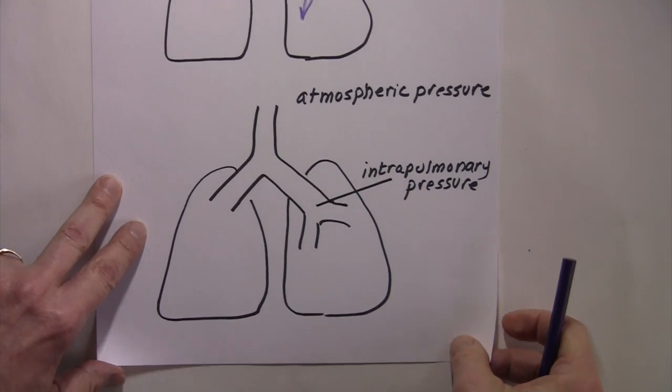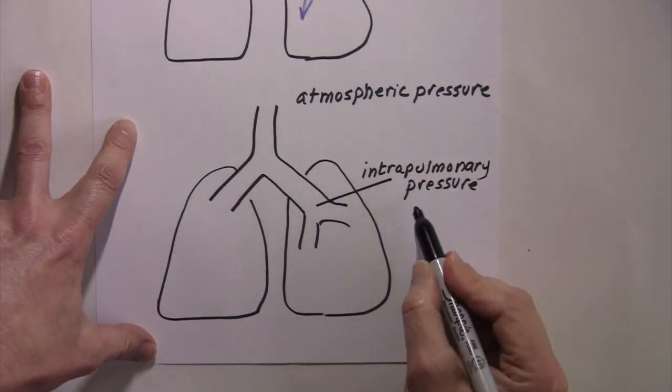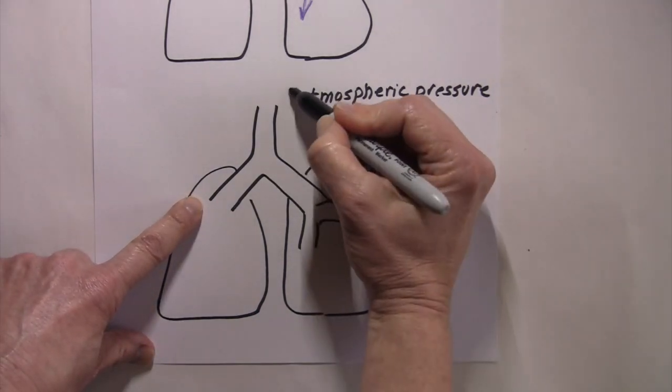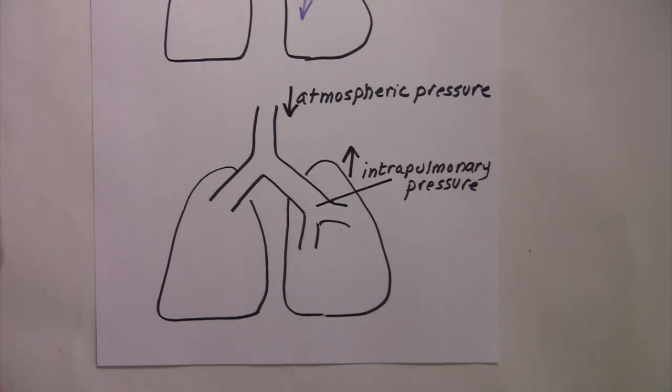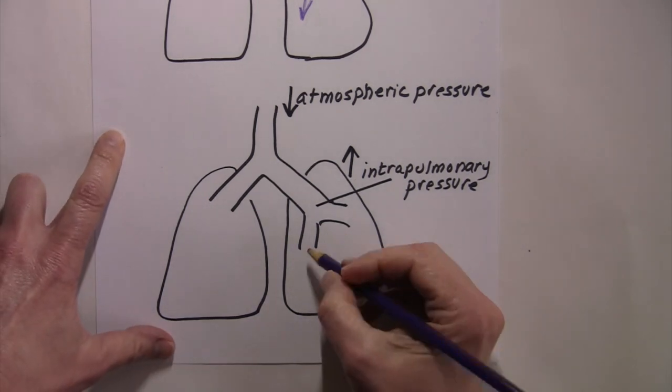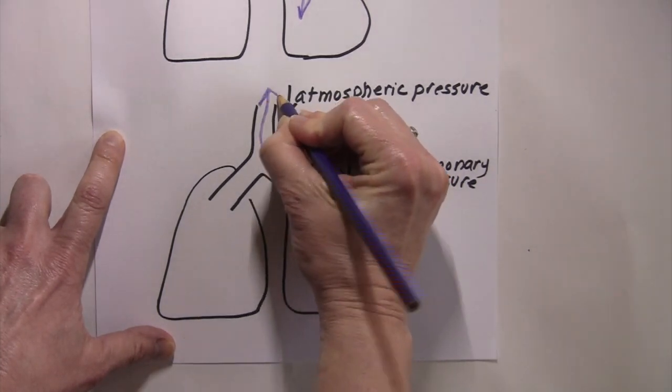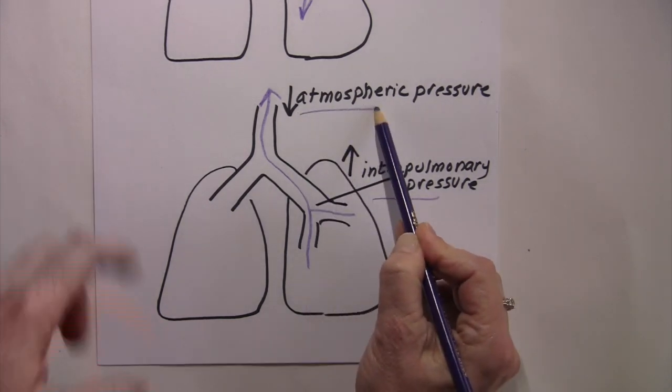And the same is true for exhalation. It's just passive. So what do you think would happen if our intrapulmonary pressure, if the air pressure inside of our lungs was higher than the atmospheric pressure? And the atmospheric pressure was lower. Hopefully you're thinking that passively, gases would move from the lungs out into the atmosphere. They would move from the area of high pressure into the area of low pressure.